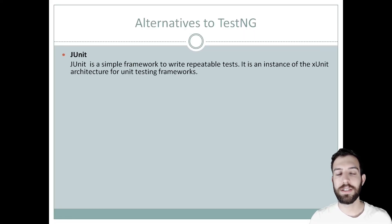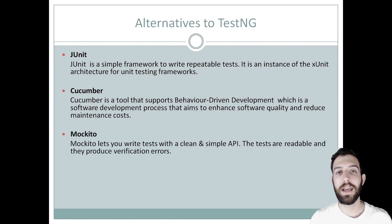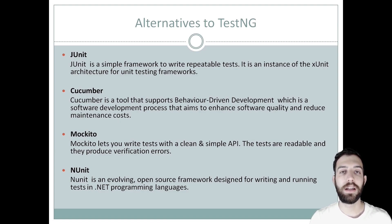Let's see some alternatives to TestNG. First, it's JUnit. JUnit is a simple framework to write repeatable tests. It is an instance of XUnit architecture for unit testing frameworks. Second, is Cucumber. Cucumber is a tool that supports behavior-driven development, which is a software development process that aims to enhance the software quality and to reduce maintenance costs. Third, is Mockito. Mockito lets you write tests with clean and simple API. The tests are very readable and create verification errors. And last is NUnit, which is an evolving open source framework that helps you to write and run tests in .NET programming languages.